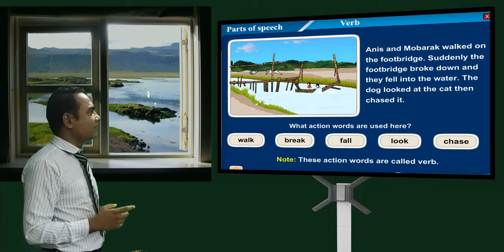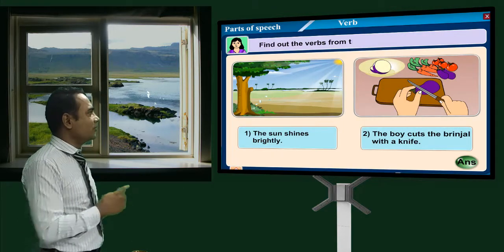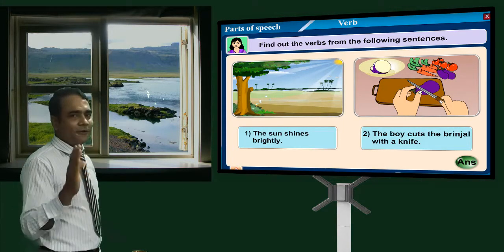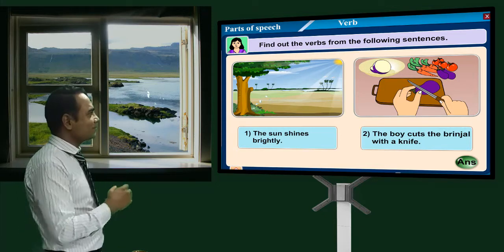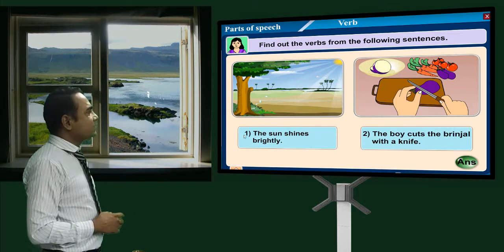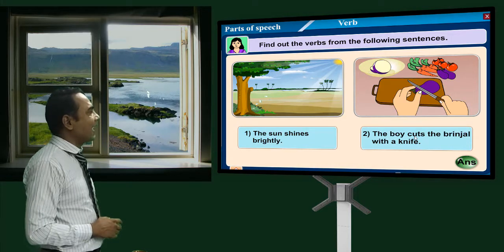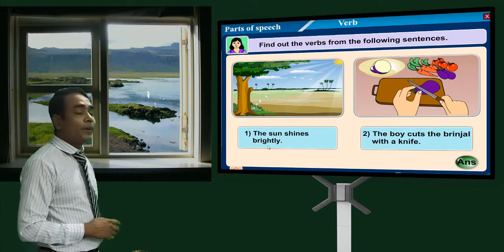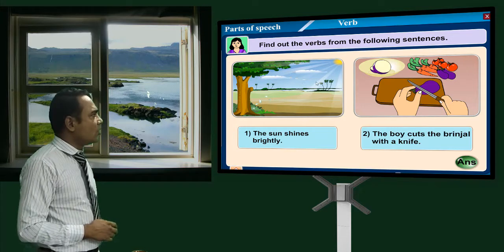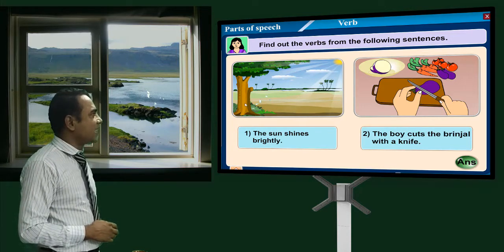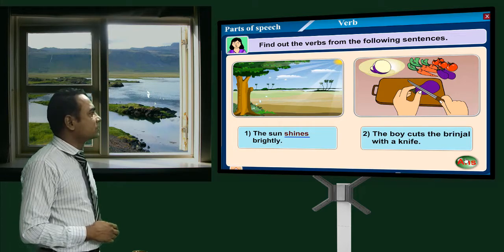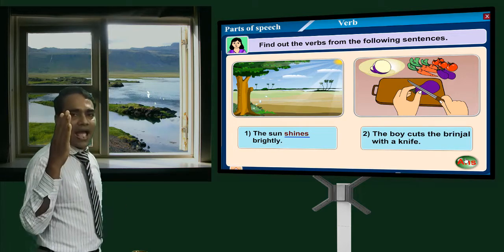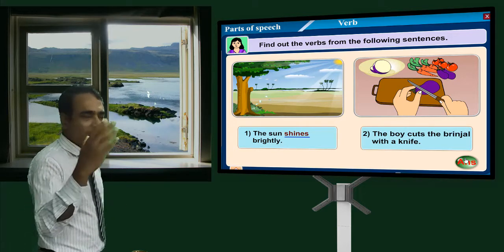Now find the verb from the following sentences by watching the pictures. 'The sun shines brightly' — 'shine' is an action word, so 'shine' is the verb. 'The boy cut the brinjal with a knife' — 'cut' is the verb here.